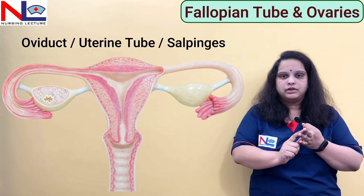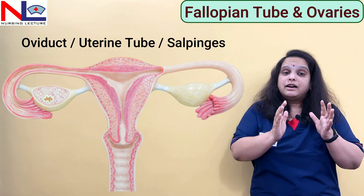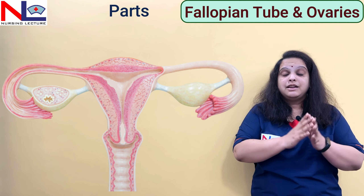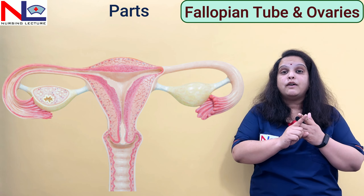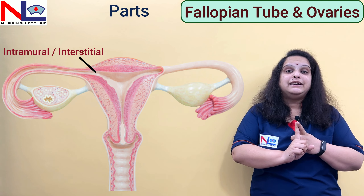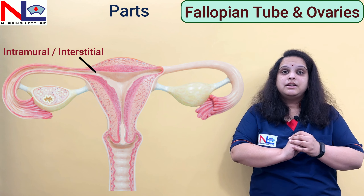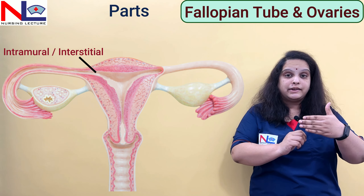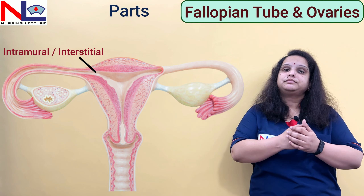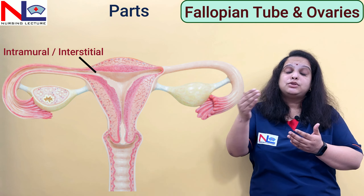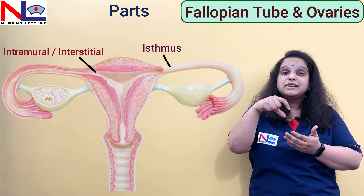Salpinx is the singular word and salpinges is the plural form. The fallopian tube has four parts. The most narrowest and first part is the intramural or interstitial part, which has the least diameter. This part lies within the uterine wall. The next narrower part is the isthmus, which is quite straight.